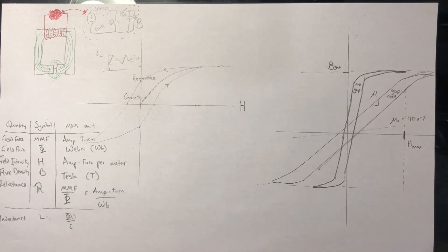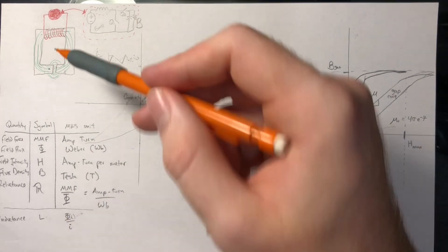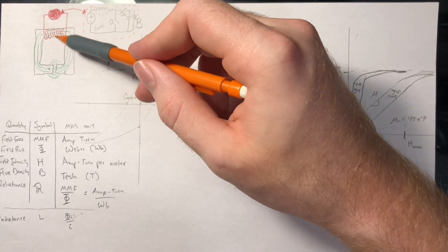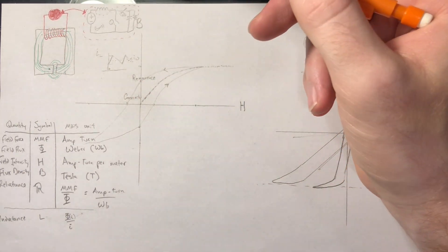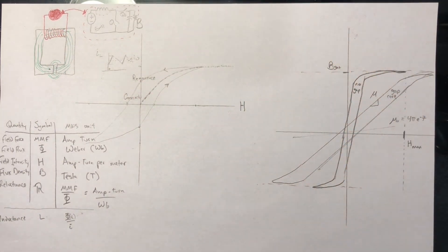And adding the gap also adds reluctance, which means for the same magnetomotive force, we get less flux. This also means that the air gap reduces the inductance since you can think of it as the amount of flux you get for a given current. So to increase the flux again, you can just add more turns into the original inductor. And that's what I learned today about the air gap.